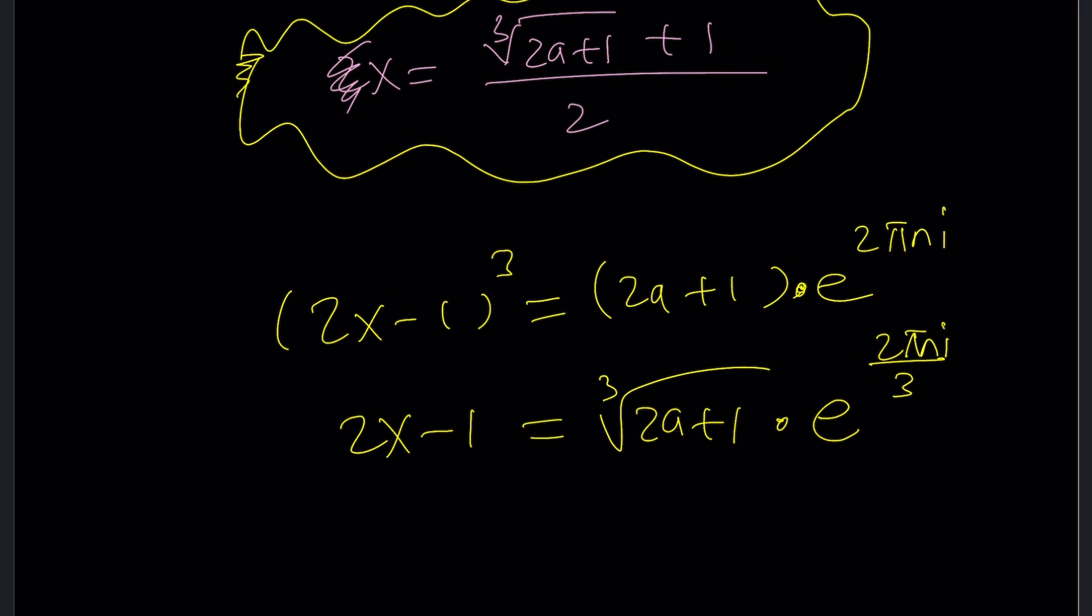And then multiply that by e^(2πni/3). For n equals 0, you get the real solution. For n equals 1 and 2, you get the complex non-real solutions, which you can get from here. Let me show you the graph, and we'll finish up with that.